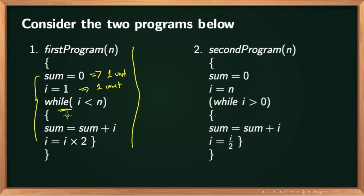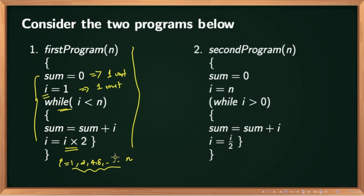The initial value of i is equal to 1. Then the value of i in each step is getting incremented as i = i * 2. So the value of i can be represented as the series 1, 2, 4, 8, ..., n. The number of terms in this series is the same as the number of times the while loop is getting executed. It is an increasing geometric progression and we have already proved that there are theta of log n terms in it. So the while loop is getting executed log n + 1 times, with the additional 1 to account for the extra step where the while loop breaks.